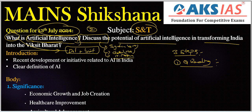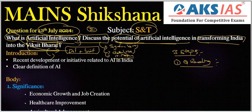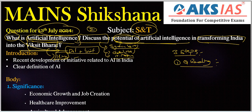We need to provide some solutions to the particular challenges. After completing all these question tags, we need to identify important keywords. Here the question says 'discuss the potential of artificial intelligence in transforming India into the Viksit Bharat', so we need to write something related to Viksit Bharat — at least one line about what it is and its target agenda. Potential is the main topic, and the question tag 'discuss' means positives, negatives, and needed measures.